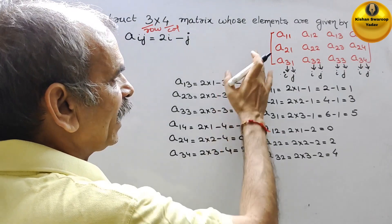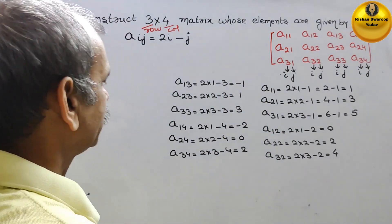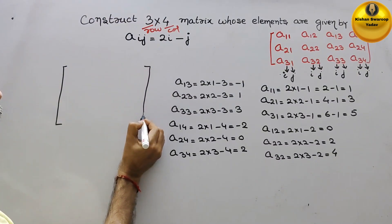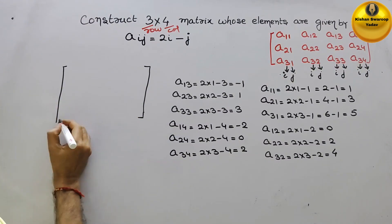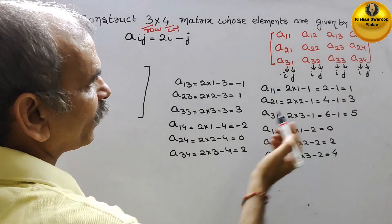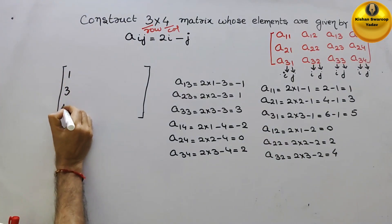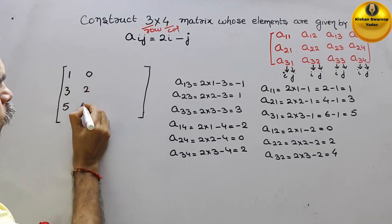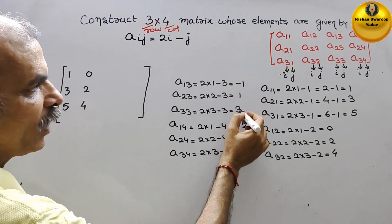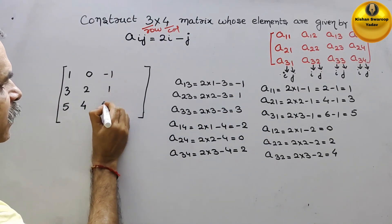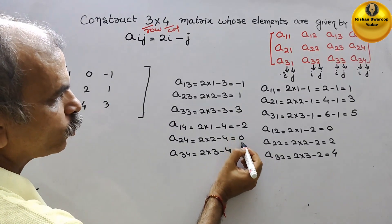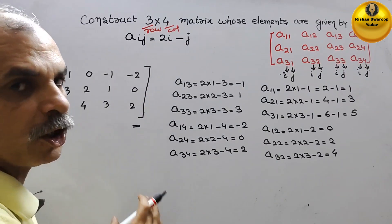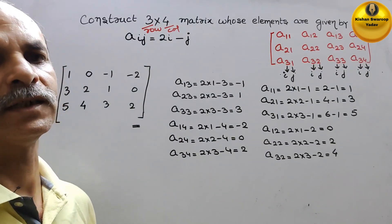Now we will construct our resultant matrix. So first column is 1, 3, 5. Next column is 0, 2, 4. Then minus 1, 1, 3. And last column is minus 2, 0, 2. So this is your required matrix. This is how we make it.